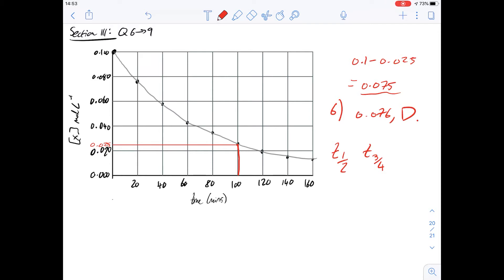So the estimate for the value of 3 over 4. Well at what point is roughly three quarters of it gone? Well that's around 100 minutes we got that in the last answer so that means that the answer for 7 is going to be C.